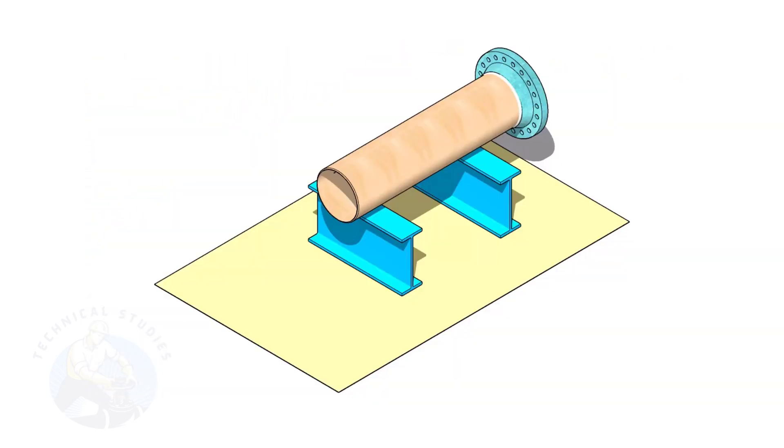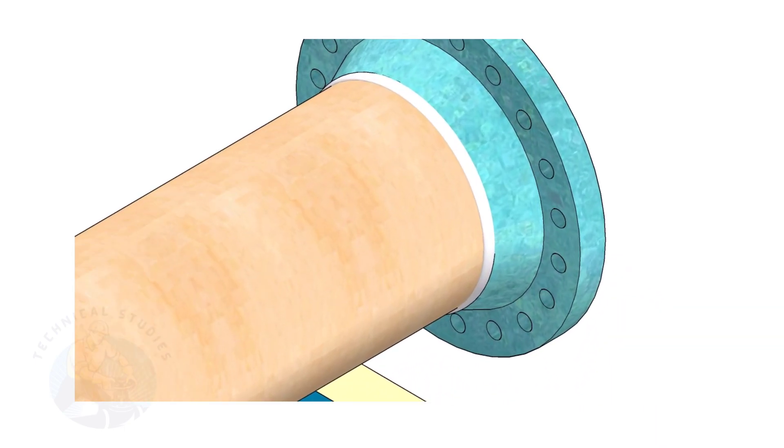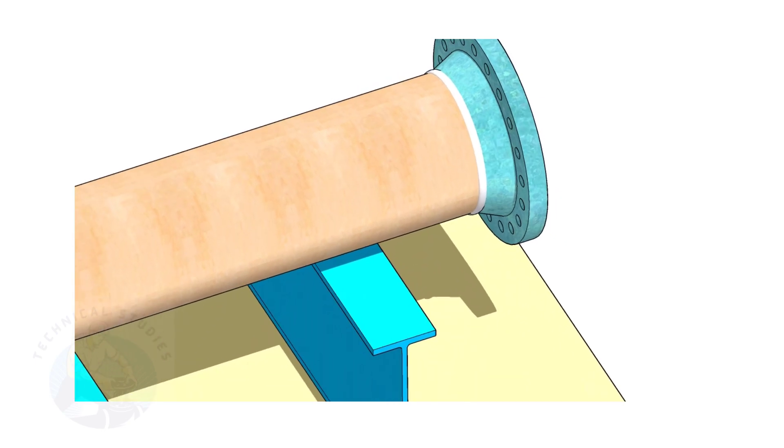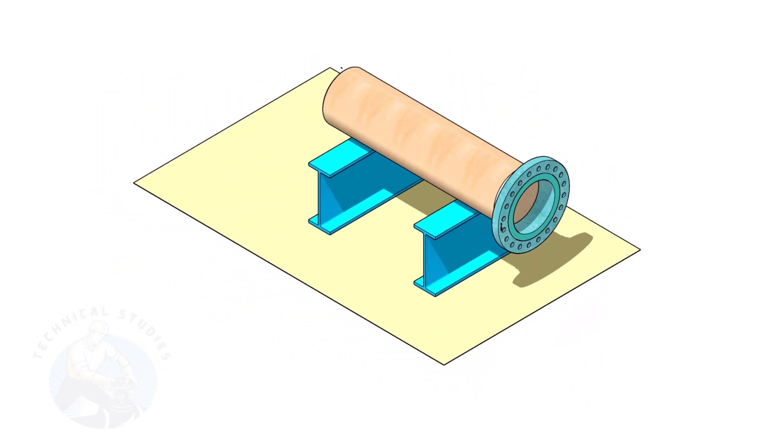Assume that the flange is welded to the pipe. Put the spool on suitable supports. Correct the plumbness of the flange.